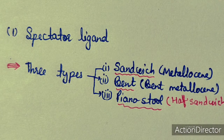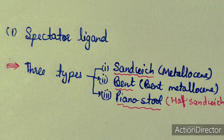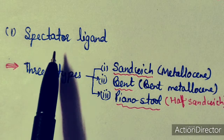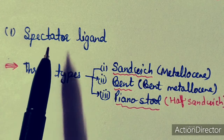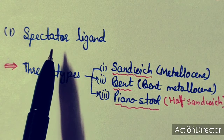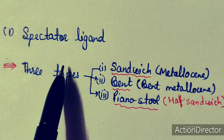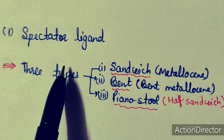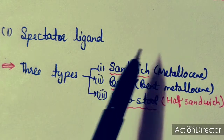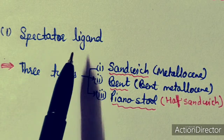A cyclopentadienyl ligand is a spectator ligand. Spectator ligands cannot react chemically during a chemical reaction, while actor ligands generally react during chemical reactions. So cyclopentadienyl is a spectator ligand.